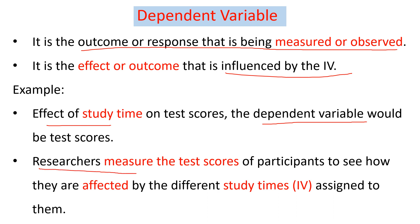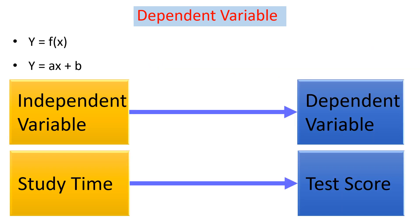Researchers primarily want to measure the test scores variation as a result of the effect of study time, that is, the independent variable. Mathematically, we can show the relationship between the independent variable and the dependent variable as y equals f of x, where x is the independent variable and y is the dependent variable, and x affects y.